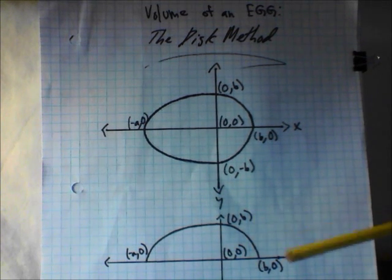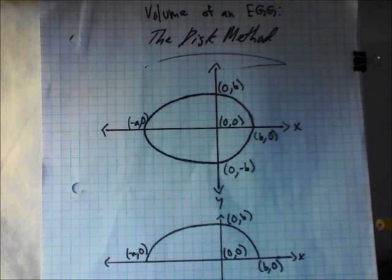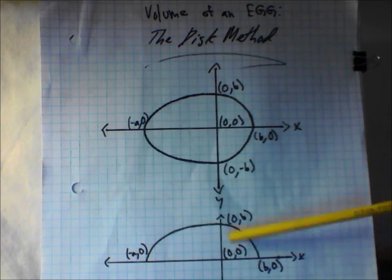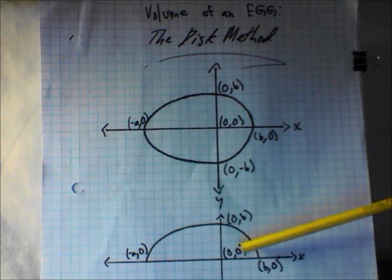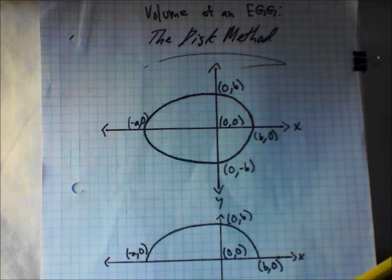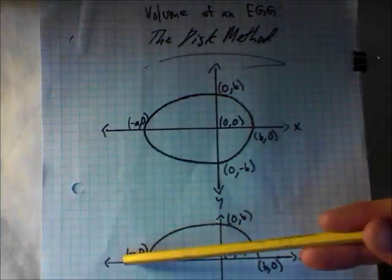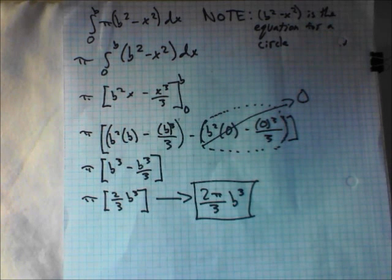When calculating volume, we're going to use volume by rotation, which means we only need half of the egg shape — the other half is accounted for when we rotate this shape all the way around the axis. So we've redrawn the egg using only half of its shape.